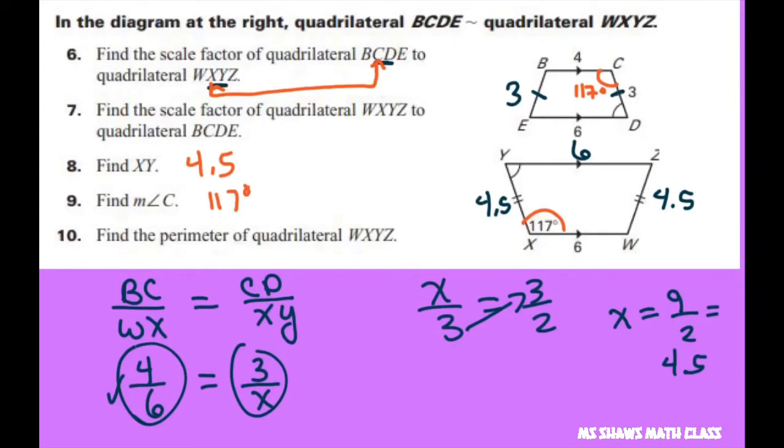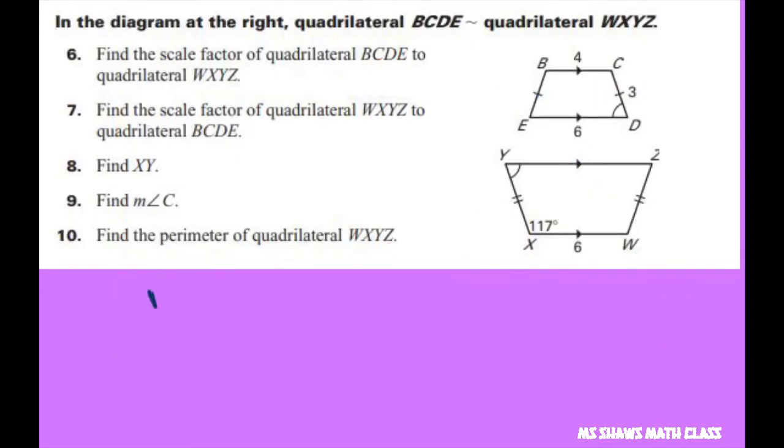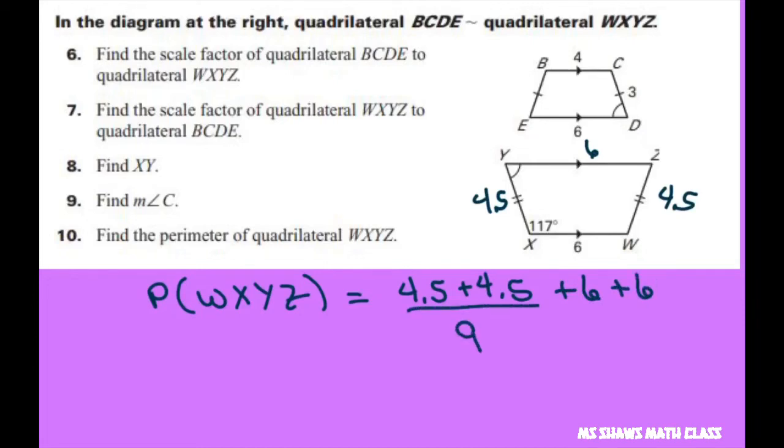Now we have to find the perimeter of the second quadrilateral WXYZ. The sides are 4.5, 4.5, 6, and 6. So that's 4.5 plus 4.5 plus 6 plus 6. These two 4.5s equal 9, plus 12 equals 21 as the perimeter.